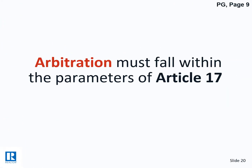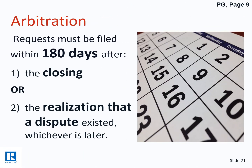Arbitration, on the other hand, is limited to circumstances falling within the parameters of Article 17. It typically relates to compensation and who was the procuring cause. If you have an issue and didn't get the check you thought you should get, you must file a request within 180 days of closing, or within 180 days of the realization that a dispute exists.